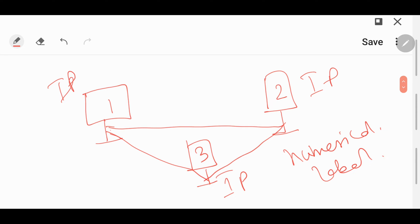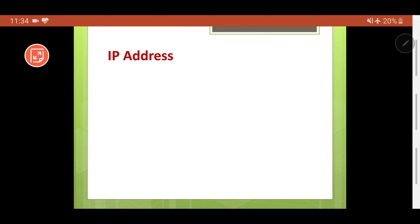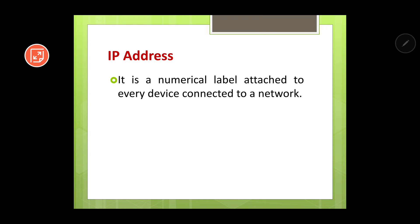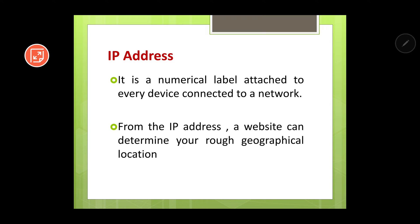Just as all of you have a home address that is unique from your friend's home address, similarly an IP address is also unique. So the definition: an IP address is a numerical label attached to every device connected to a network. From the IP address, a website can determine your rough geographical location — for example, if you are using a website from Kolkata, your location can be traced from your IP address.